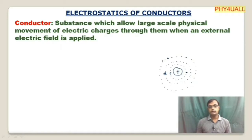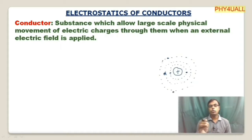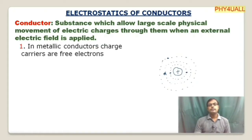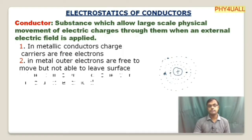The bound electrons along with the nucleus act as a positive ion. The bound electrons (except the valence electron) and the nucleus together act as a positively charged ion. The valence electron is responsible for conduction. In metallic conductors, the charge carriers are free electrons. In metals, outer electrons are free to move — these are called free charge carriers — and they cannot leave the surface.